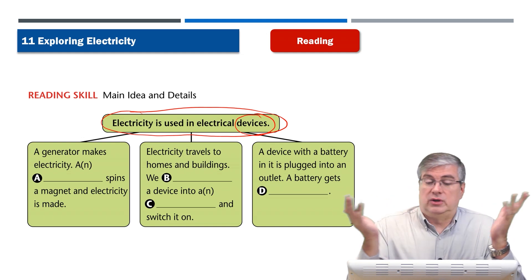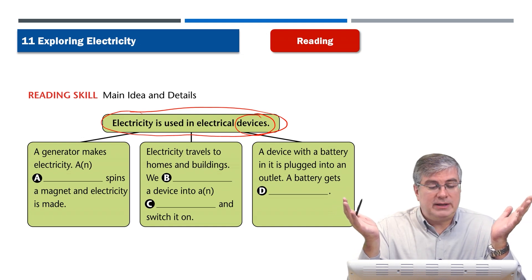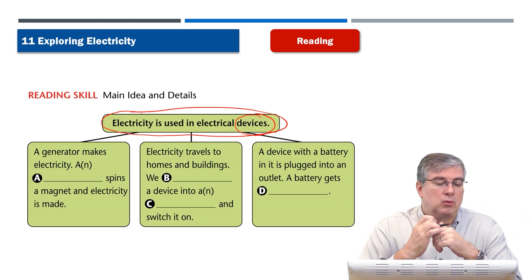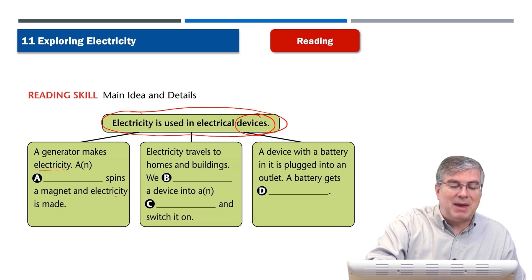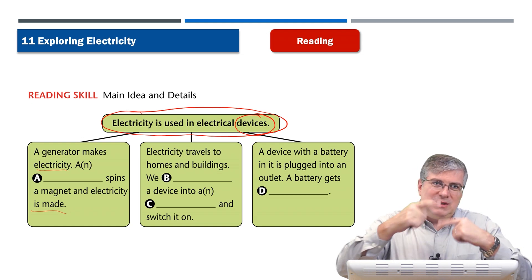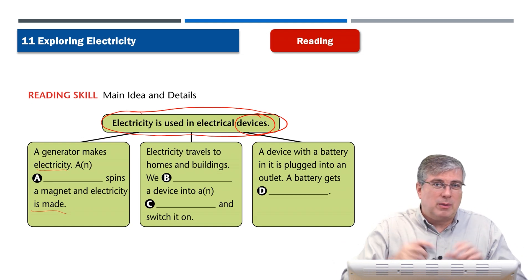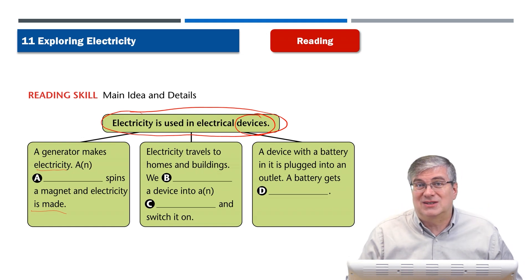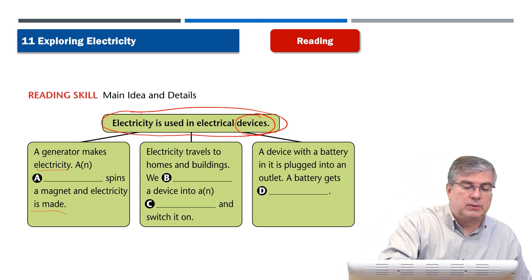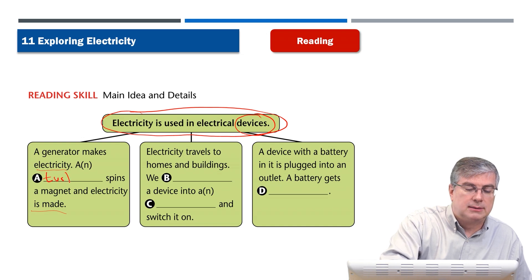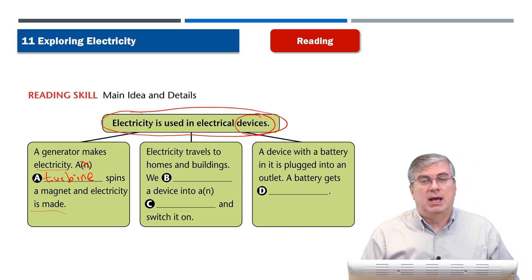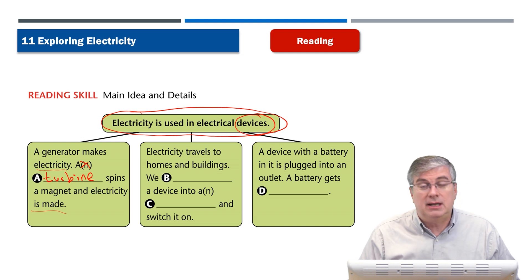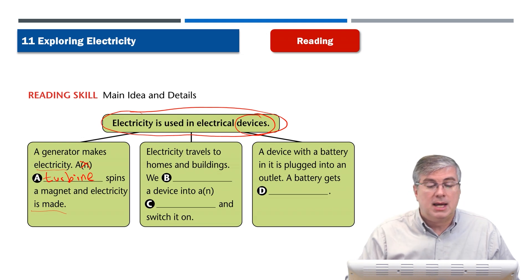That's a very broad idea — electricity is used in electrical devices. Let's support it with details. First: a generator makes electricity — a turbine spins a magnet and electricity is made. That big machine that looks like it's from a science fiction movie is the turbine. A turbine spins a magnet and electricity is made.